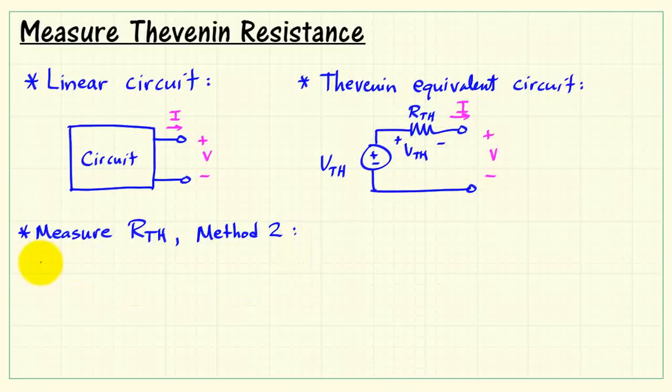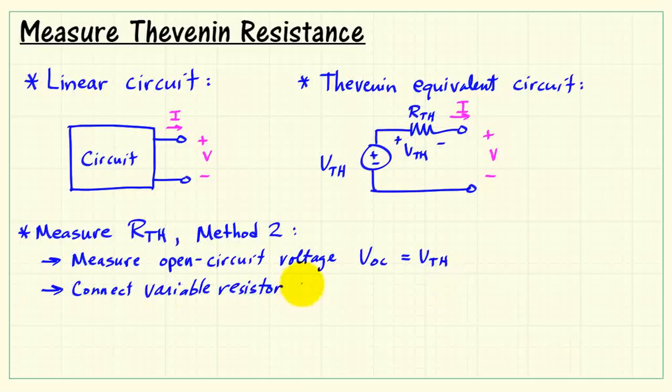Here's a second method you can try. Measure the open circuit voltage; that's the same as the Thevenin voltage. Then connect a variable resistor such as a potentiometer.